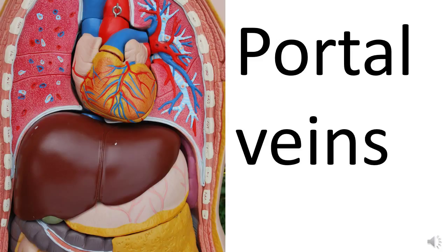The systemic veins carry deoxygenated blood, but the veins carrying blood from the lungs back to the left side of the heart carry oxygenated blood, rich in oxyhaemoglobin. Veins and arteries aren't defined by the type of blood they carry - they're defined by the direction in which they carry it. A vein is defined as any vessel which carries blood from capillaries back towards the heart. In the systemic circulation, blood goes from arteries to arterioles to capillaries.